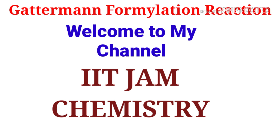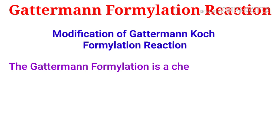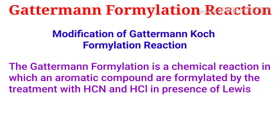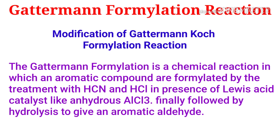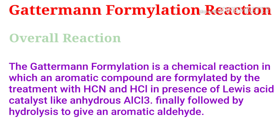Hello friends, today I am going to discuss the Gutterman-Formylation reaction. This Gutterman reaction of formylation is a modification of the Gutterman-Koch-Formylation reaction. The Gutterman-Formylation is a chemical reaction in which an aromatic compound is formylated by treatment with hydrogen cyanide and hydrogen chloride in the presence of a Lewis acid catalyst like anhydrous AlCl3, followed by hydrolysis to give an aromatic aldehyde.